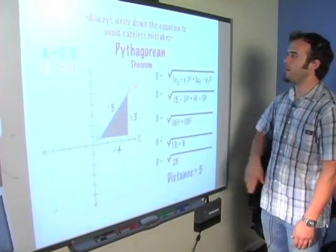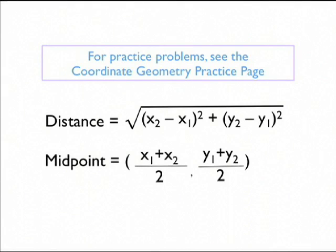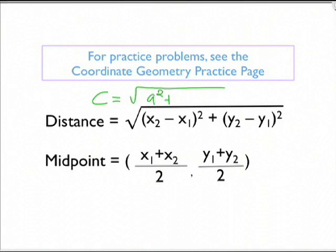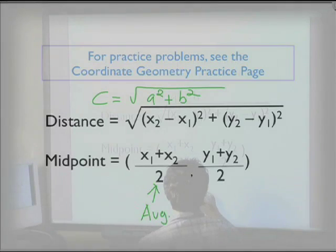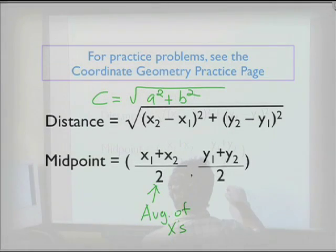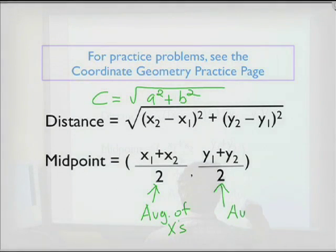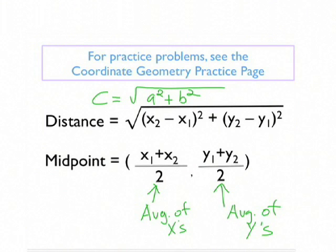Now moving along, we're going to sum up our equations. Remember that the distance formula is related to the Pythagorean Theorem, which is why we know that the square root of x2 minus x1 squared plus y2 minus y1 squared is identical to saying that c equals the square root of a squared plus b squared. And we also want to remember that the midpoint formula is the average of the x's comma the average of the y's.